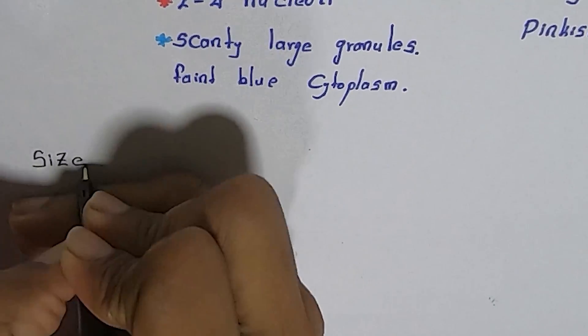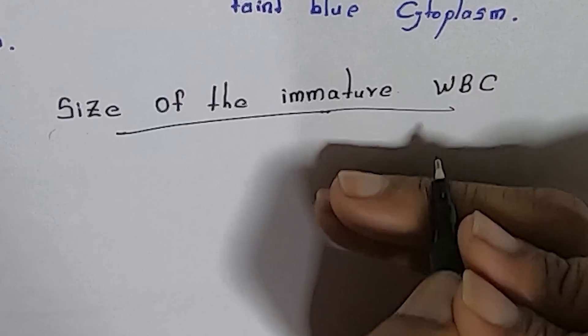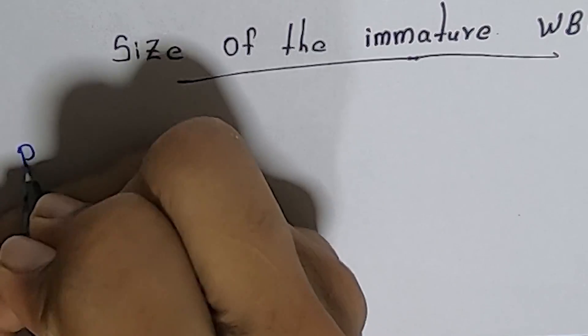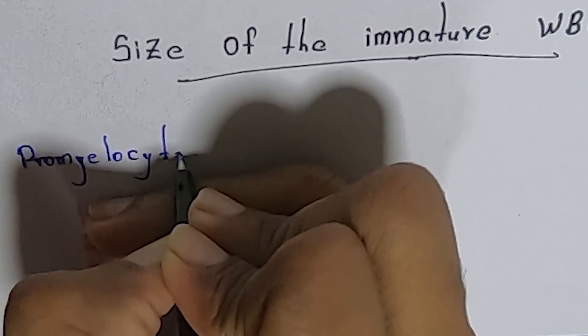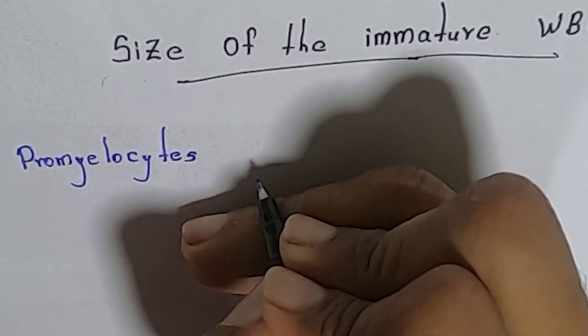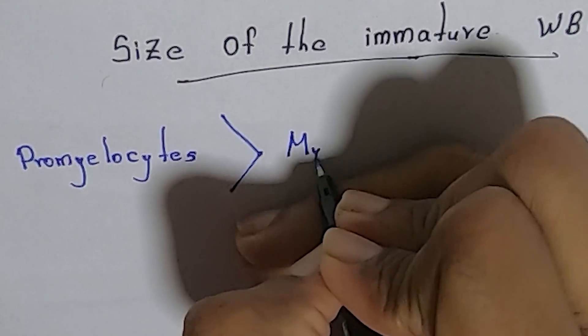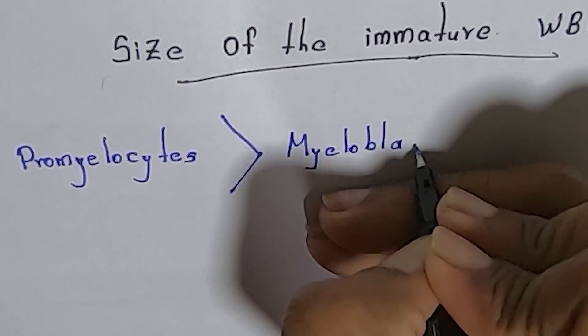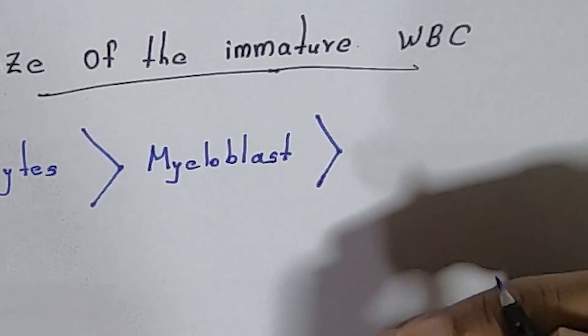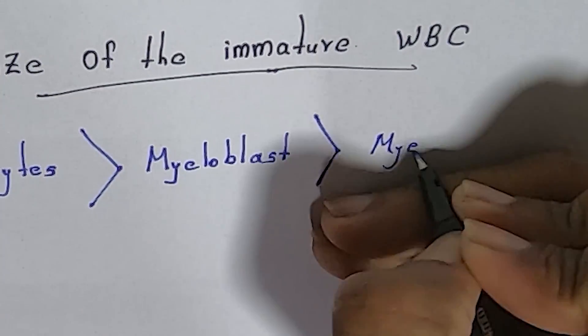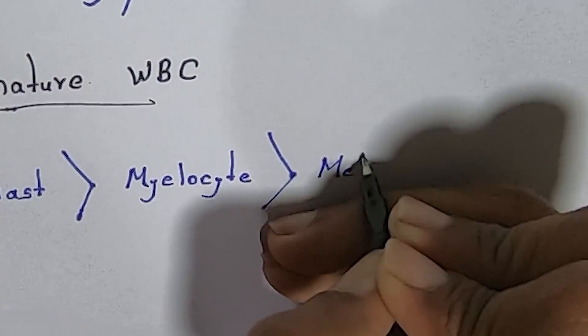When we consider the size of the cells, promyelocytes are the bigger cells, then myeloblast, myelocyte, metamyelocyte, stab forms or band neutrophils are the smaller cells. Finally, these cells give rise to mature granulocytes.